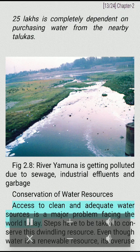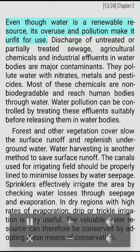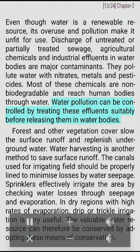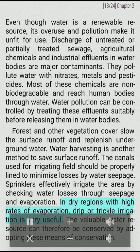Conservation of water resources: Access to clean and adequate water sources is a major problem facing the world today. Steps have to be taken to conserve this dwindling resource. Even though water is a renewable resource, its overuse and pollution make it unfit for use. Discharge of untreated or partially treated sewage, agricultural chemicals and industrial effluents in water bodies are major contaminants. They pollute water with nitrates, metals and pesticides. Most of these chemicals are non-biodegradable and reach human bodies through water. Water pollution can be controlled by treating these effluents suitably before releasing them in water bodies. Forest and other vegetation cover slow the surface runoff and replenish underground water. Water harvesting is another method to save surface runoff. The canals used for irrigating fields should be properly lined to minimize losses by water seepage. Sprinklers effectively irrigate the area by checking water losses through seepage and evaporation. In dry regions with high rates of evaporation, drip or trickle irrigation is very useful.